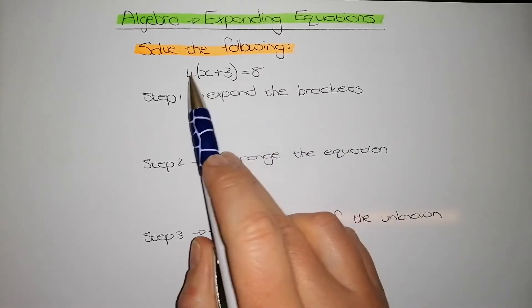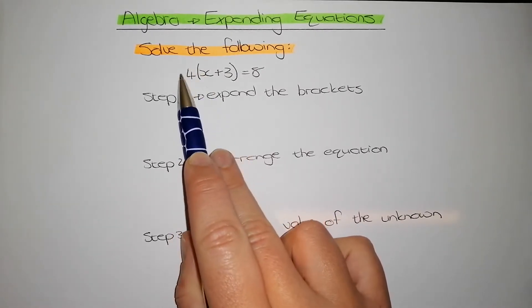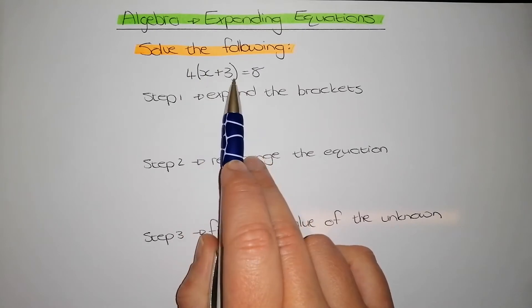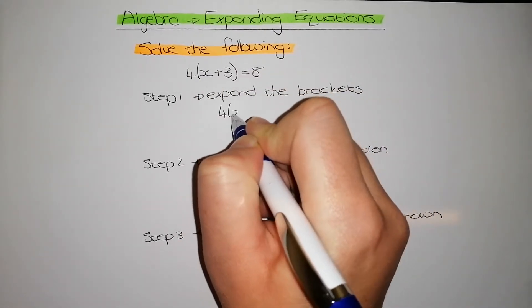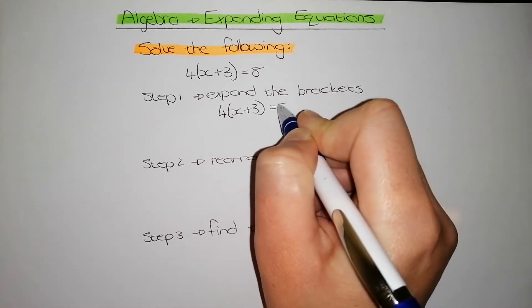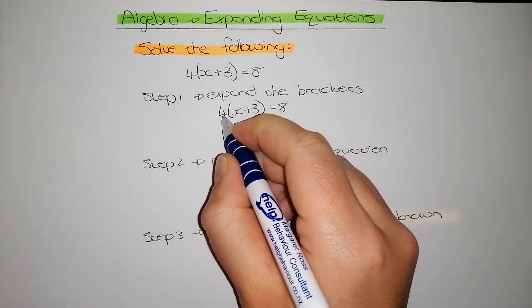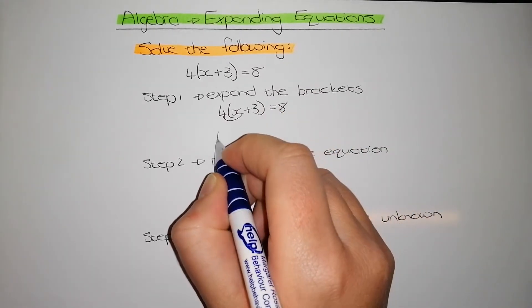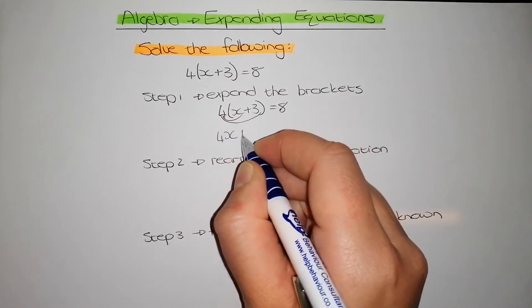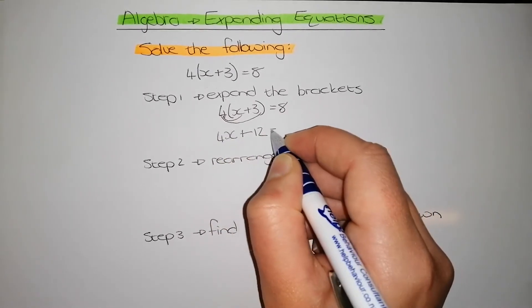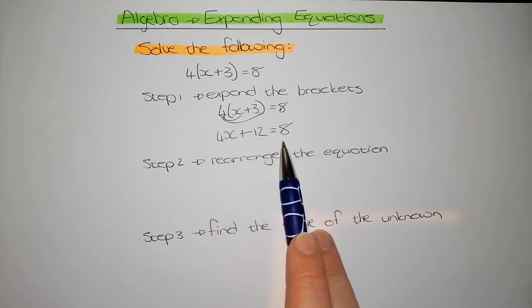So when I expand the bracket, it means that I need to multiply everything in front of my bracket with everything inside of my bracket. So I'm going to rewrite my equation: 4(x+3) = 8. What I need to do is multiply this 4 by everything. So 4 times x gives me 4x. 4 times 3 gives me 12. And that is equal to 8. That is step 1 done.